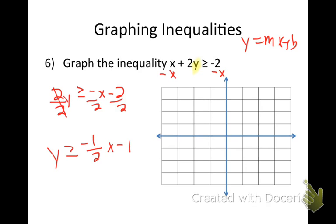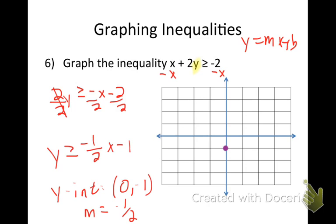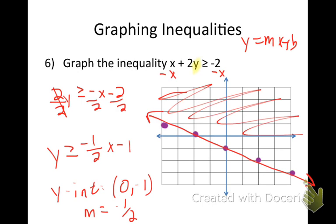Graph this: my y-intercept is (0, negative 1), my slope is negative 1 half, so I go down 1 over 2. It's a solid line because it's greater than or equal to, and I shade above.